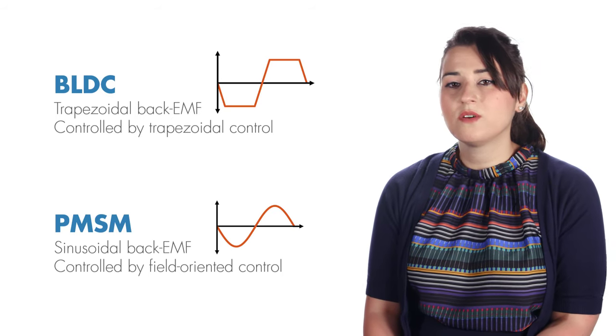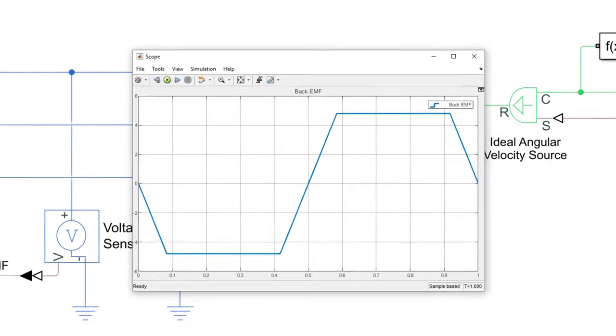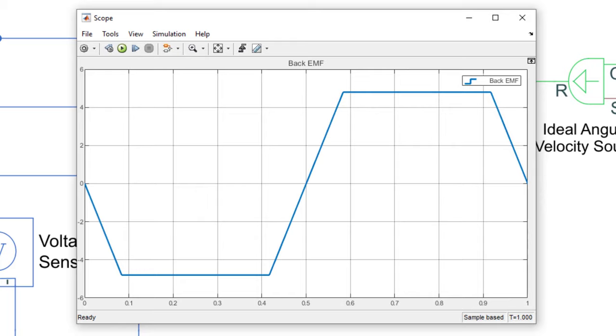An easy way to observe the back EMF shape is to use simulation. We can simulate a one-pole pair BLDC with open circuit terminals. This means none of the coils is driven. But we can apply some torque to rotate the rotor so that it acts like a generator and then measure the voltage at phase A, which will give us the phase A back EMF. As you see on the scope, the back EMF of the BLDC motor has a trapezoidal shape, which includes regions where the voltage remains flat. This tells us we can control this motor using DC voltage.